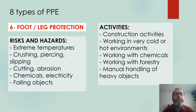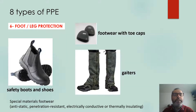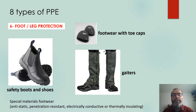The sixth type of PPE is related to foot and leg protection. It helps to prevent risks related to extreme temperatures, crushing, piercing, slipping, cutting or abrasion, chemicals, electricity hazards, or falling objects. Activities that may require these include construction activities, working in very cold or hot environments, working with chemicals, forestry, or the handling of heavy objects. Examples include safety boots and shoes, gaiters, or footwear with toe caps. Special materials for footwear include antistatic, penetration-resistant, electrically conductive, or thermally insulating, among others.